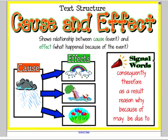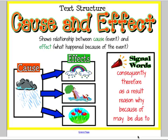Some signal words in a cause and effect text structure you might hear are: consequently, therefore, as a result, reason why, because of, and may be due to.